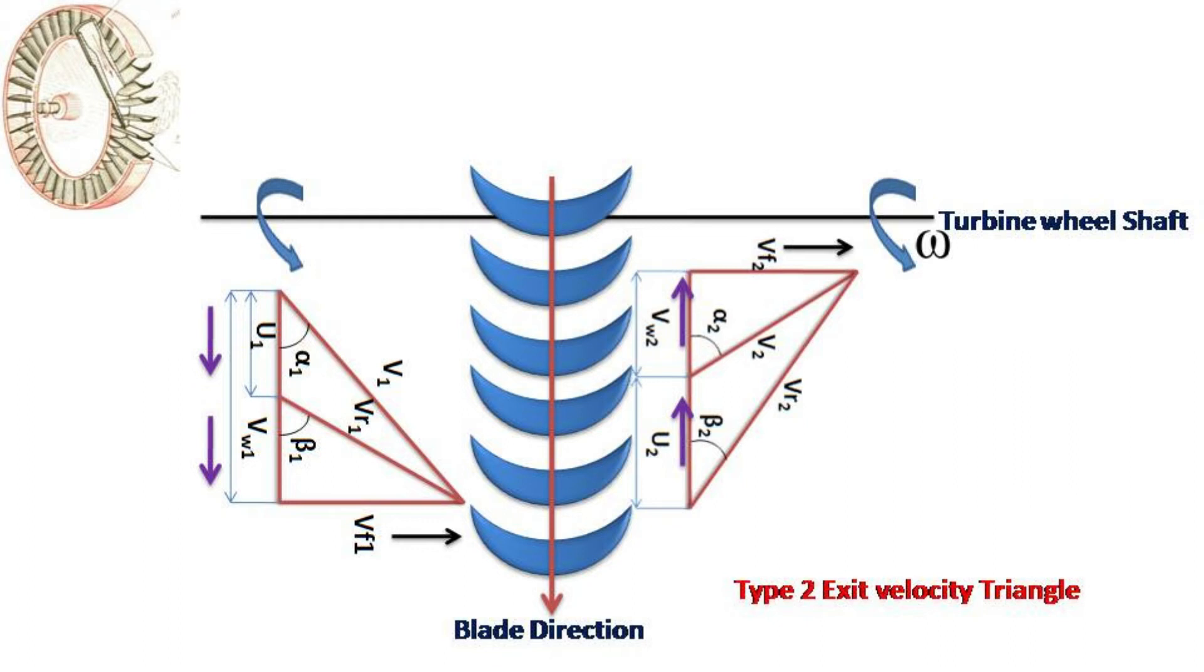Vw1, vw2, u1, and u2 are perpendicular to the wheel axis but parallel to the blade direction.